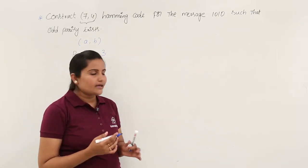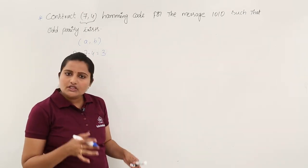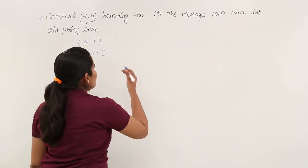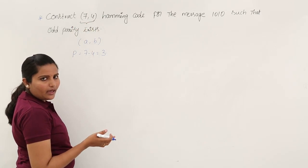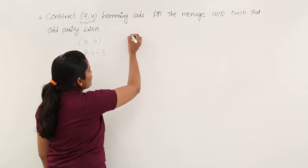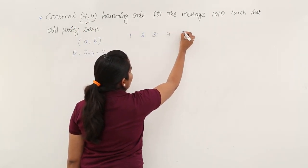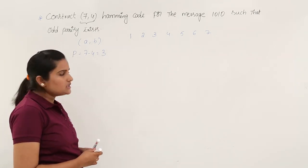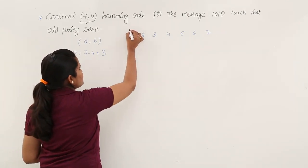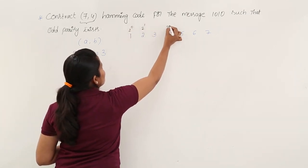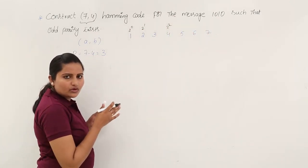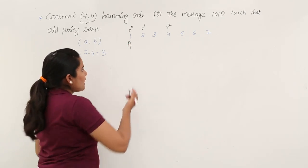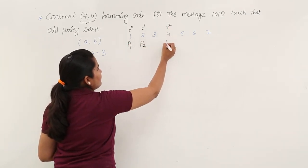Now you need to place those parity bits within the message. The positions where parity bits are placed correspond to powers of 2. For a 7-bit Hamming code we have 7 positions: 1, 2, 3, 4, 5, 6, 7. The parity bits are placed at positions 1 (2^0), 2 (2^1), and 4 (2^2). There is no 2^3 or 2^4 position in a 7-bit code. So P1 goes at position 1, P2 at position 2, and P3 at position 4.